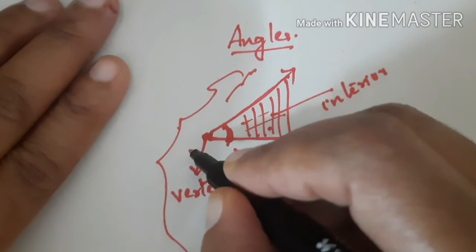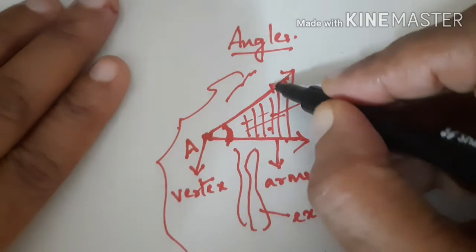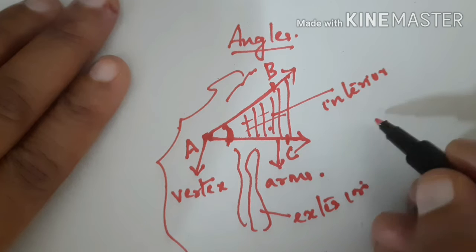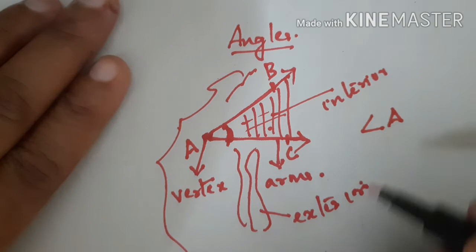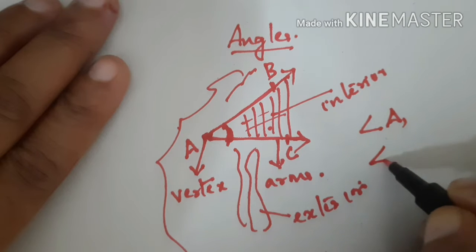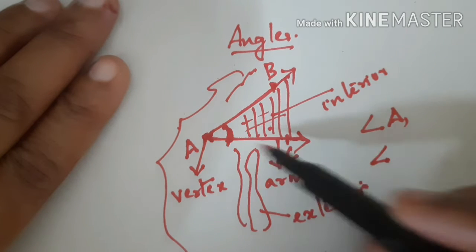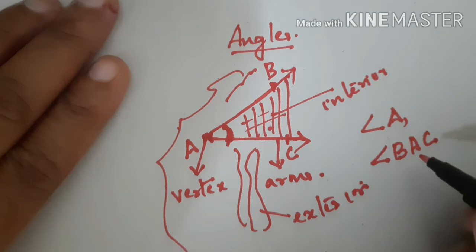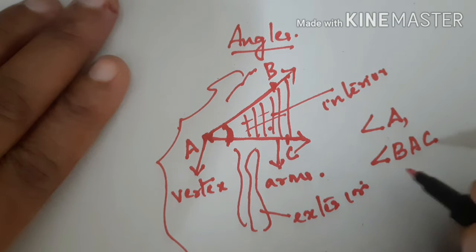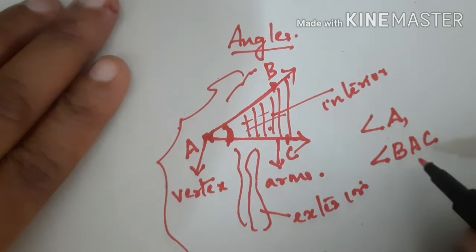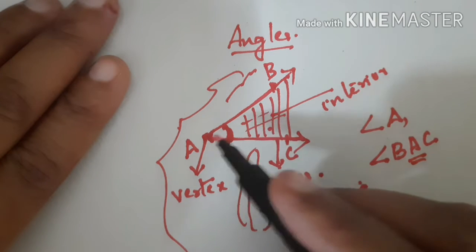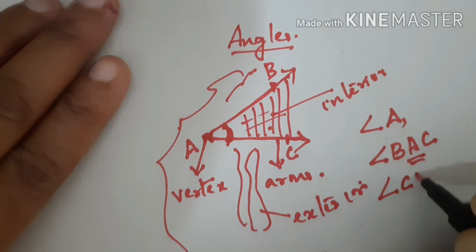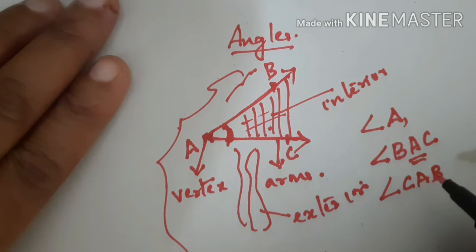Now we can name the angle. I am going to name this point as A, and let there be B and another C. When you name the angle you can say it as angle A, or you can name it using three letters — angle BAC. But when you write using three letters, one thing you must keep in mind: the vertex must be in the center. Here A is the vertex, so A should be in the center. You can write this angle as angle BAC or angle CAB — both are the same.